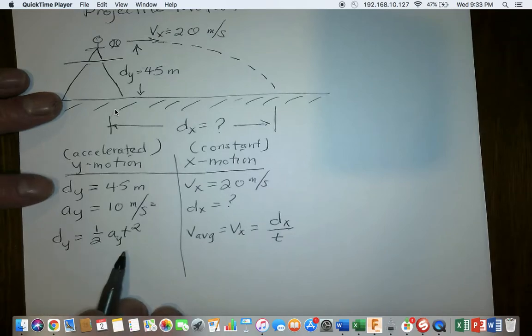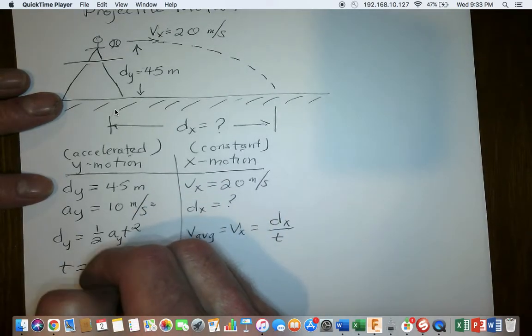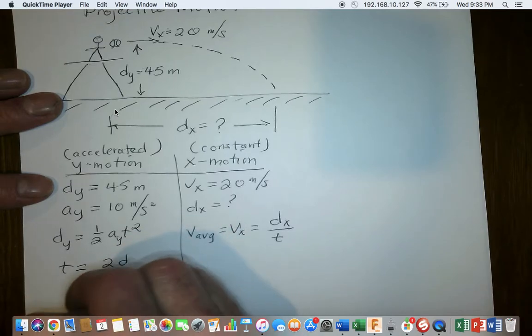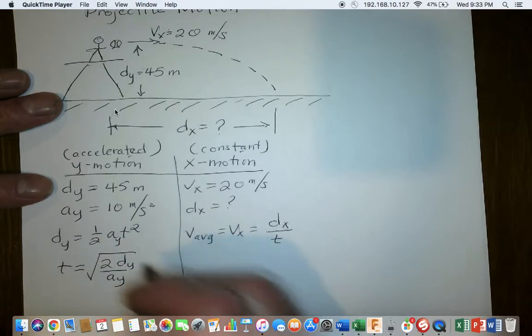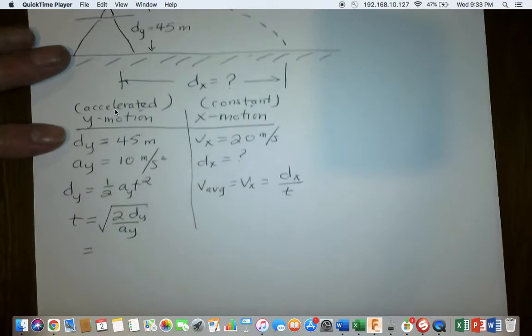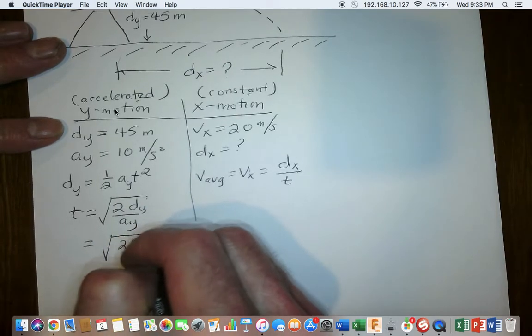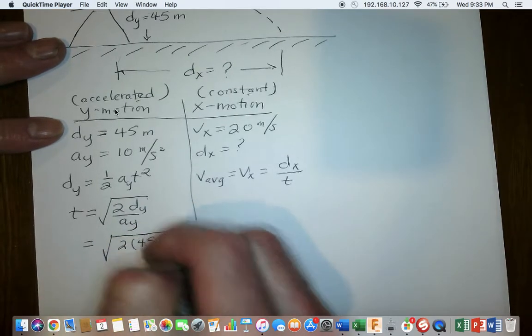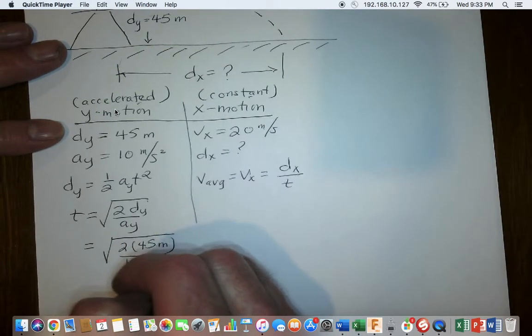If I were to solve this for time, I would have time is equal to 2 times the distance divided by that acceleration in the Y direction and the square root of all of that. If I take twice the distance in the Y direction, which is 45 meters, and I divide it by 10 meters per second squared, the meters cancel.